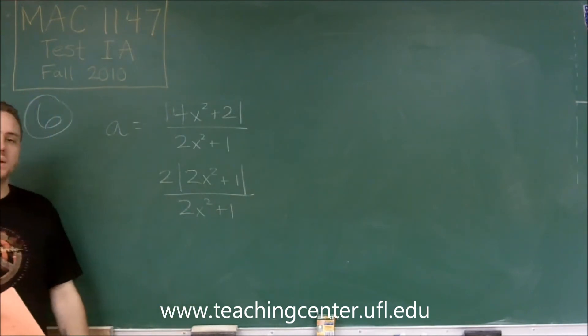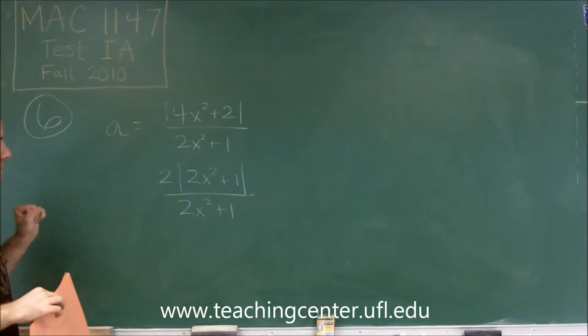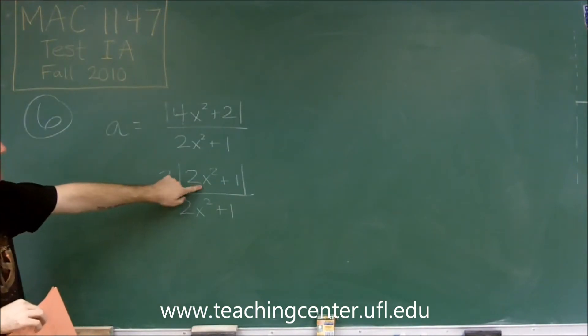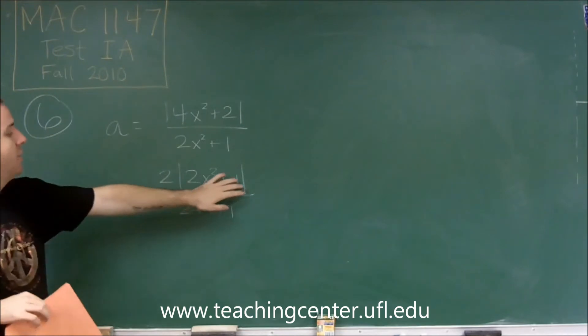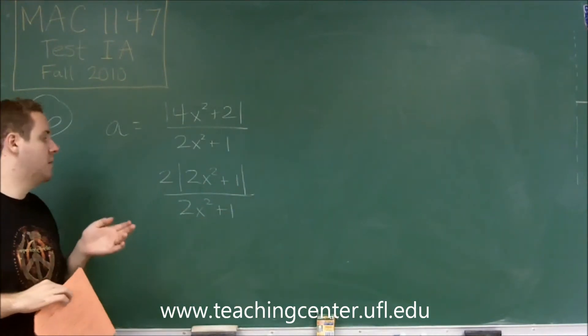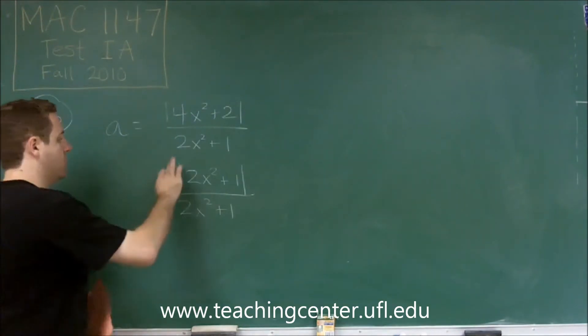Now these look the same and we would be able to cancel them out if there wasn't an absolute value bar there. So let's see if we can get rid of that somehow. Well, x squared is always positive or 0 and when we add 1 to it, we're always going to have a positive number. Meaning that these absolute value bars are not doing anything.